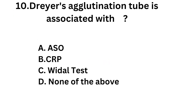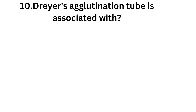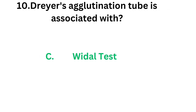Question number 10: Dryer's agglutination tube is associated with — Option A: ASO. Option B: CRP. Option C: Widal test. Option D: None of the above. The correct answer is Option C, Widal test. Dryer's agglutination tubes are used for Widal test.